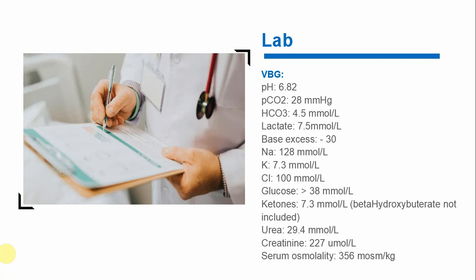Urea and creatinine were both high; the urea-to-creatinine ratio was more than 100, indicating a pre-renal component, likely acute-on-chronic secondary to dehydration given her known chronic kidney disease. The measured serum osmolality was 356 — quite high. From this analysis, this was a very complicated, critically unwell patient with the main diagnosis being diabetic ketoacidosis with hyperosmolarity, hyperglycemia, and a hyperketotic state — DKA rather than hyperosmolar hyperglycemic non-ketotic state.